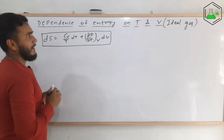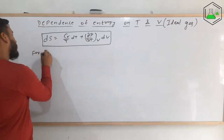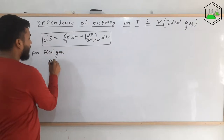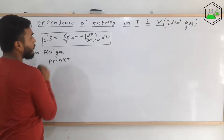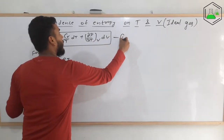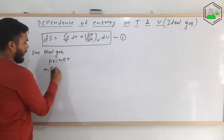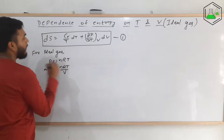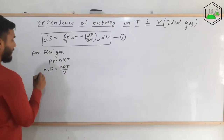Now let us see for ideal gas. For ideal gas, the ideal gas equation can be applied: pV equals nRT. Let us consider this to be equation number one. From this, the value of p will be nRT/V.